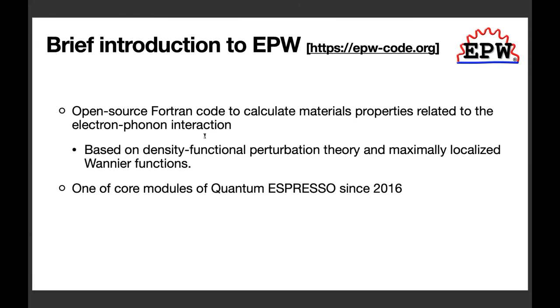EPW is an open source community code for predictive calculations of electron phonon physics and related materials properties. EPW is based on density functional perturbation theory and Wannier function. EPW is also one of the core modules of the quantum espresso package since 2016.